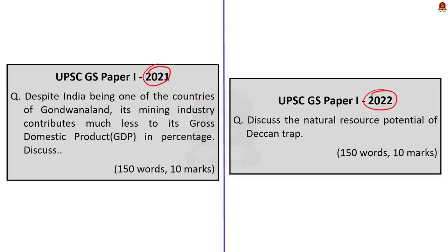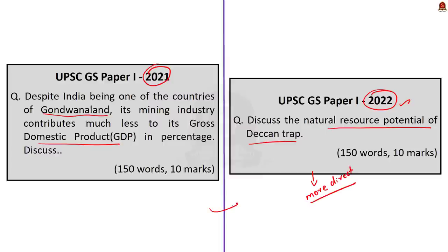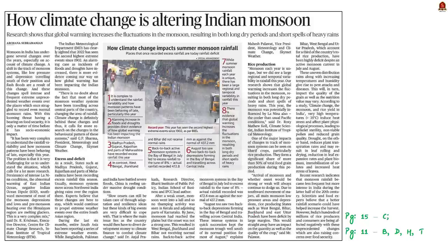Look at this question from 2021 GS Paper 1, which says: 'Despite India being one of the countries of Gondwana land, its mining industry contributes much less to its GDP in percentage. Discuss.' And now look at a similar question from the 2022 paper: 'Discuss the natural resource potential of the Deccan Trap.' The 2022 question is more direct and focuses on core geography, so we must not compromise on the basics.